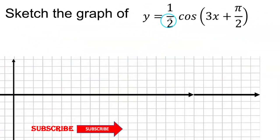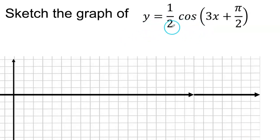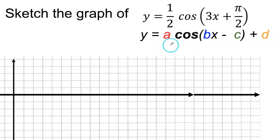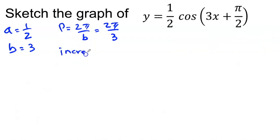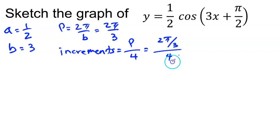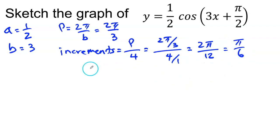Now let's work on the second example. Instead of sine, we have one half cosine of (3x plus π over 2). From the general equation, the amplitude A is one half and the frequency B is 3. The period equals 2π over B, which is 2π over 3. The increments are the period divided by 4: (2π over 3) divided by 4, which gives 2π over 12, simplifying to π over 6. So each increment is π over 6.